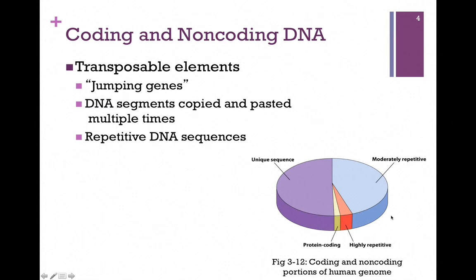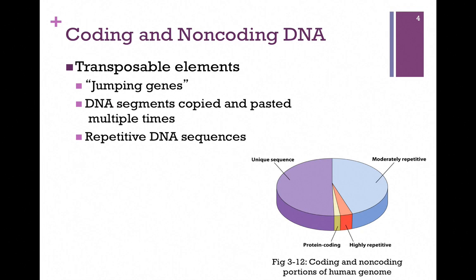These repetitive sequences arise from transposable elements, or transposons, also called jumping genes. These are segments of DNA that are copied and pasted multiple times, giving rise to these repetitive sequences. Some of these sequences code for RNA, and some do not.